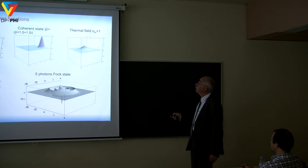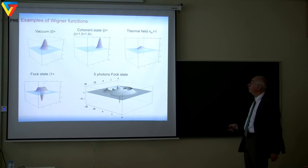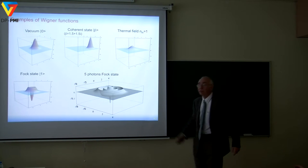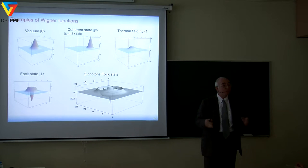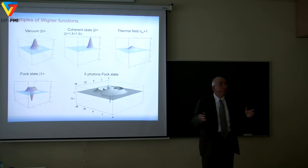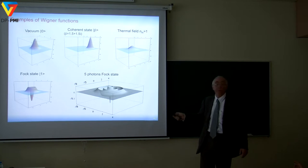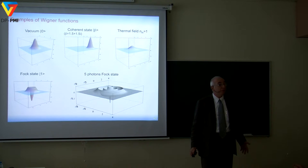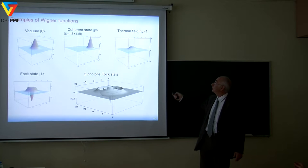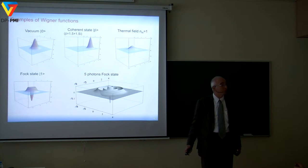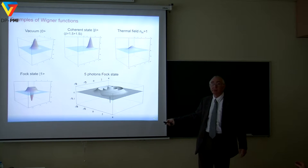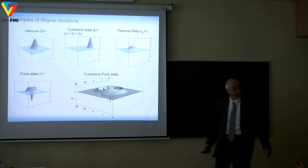This is a coherent state, this is the vacuum, this is a thermal field — just a blurred vacuum — and this is the Fock state |1⟩, and here you see why the Wigner function is beautiful. The Fock state |1⟩ has a negative Wigner function at the origin. You cannot think of a one-photon Fock state in classical probabilistic terms because the probability for having zero amplitude would have to be negative, which makes no sense. So there is a clear-cut distinction between classical states with positive Wigner function — and any positive Wigner function is Gaussian, a beautiful theorem — and all quantum states which have negativities in the Wigner function.